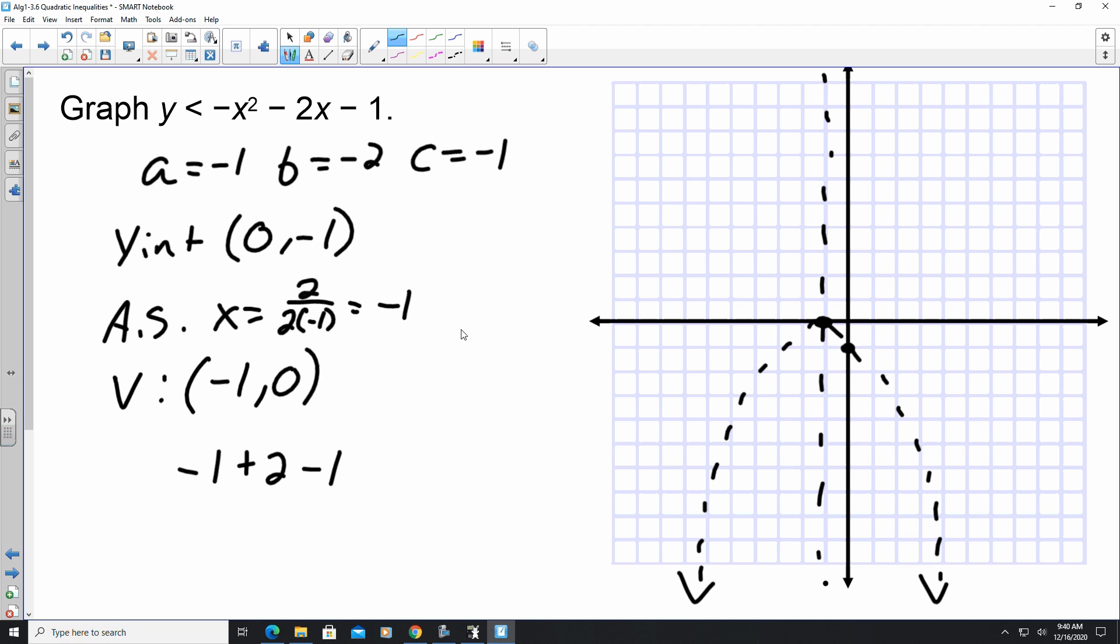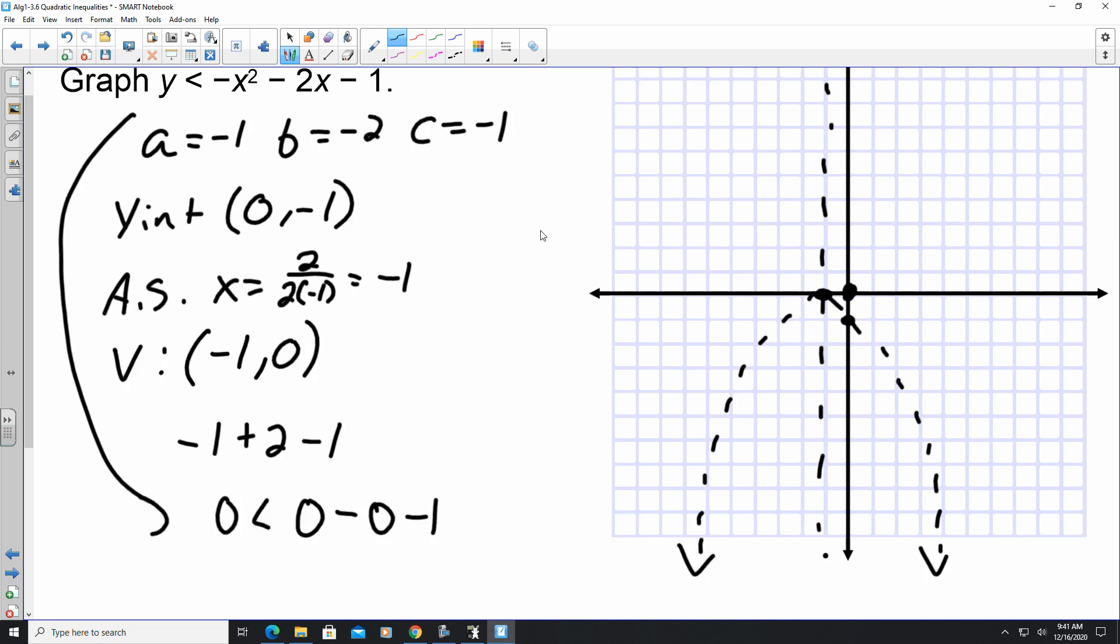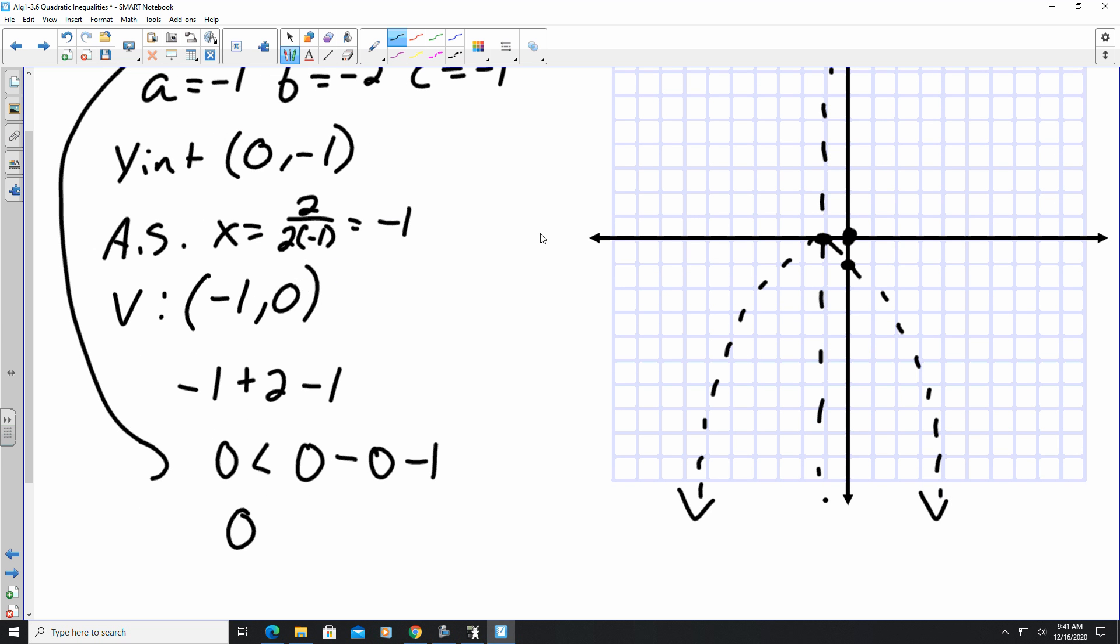I can use 0 comma 0 as my test point to see where my shading is going to go. So basically what it's going to be is, is 0 less than 0 minus 0 minus 1. Is 0 less than negative 1? No, that is not true.